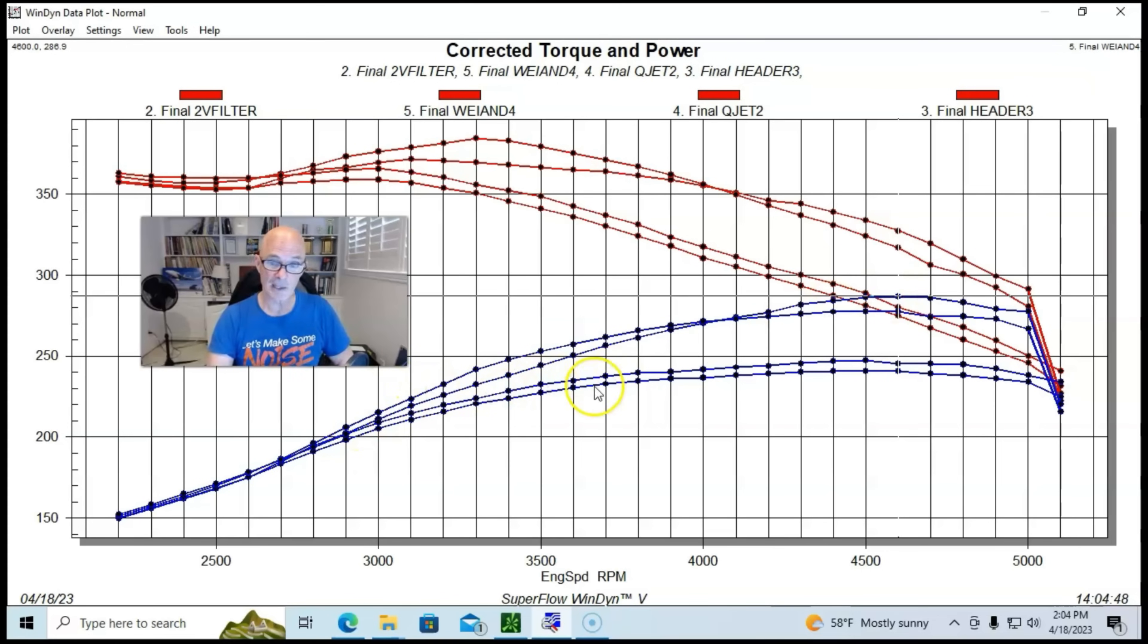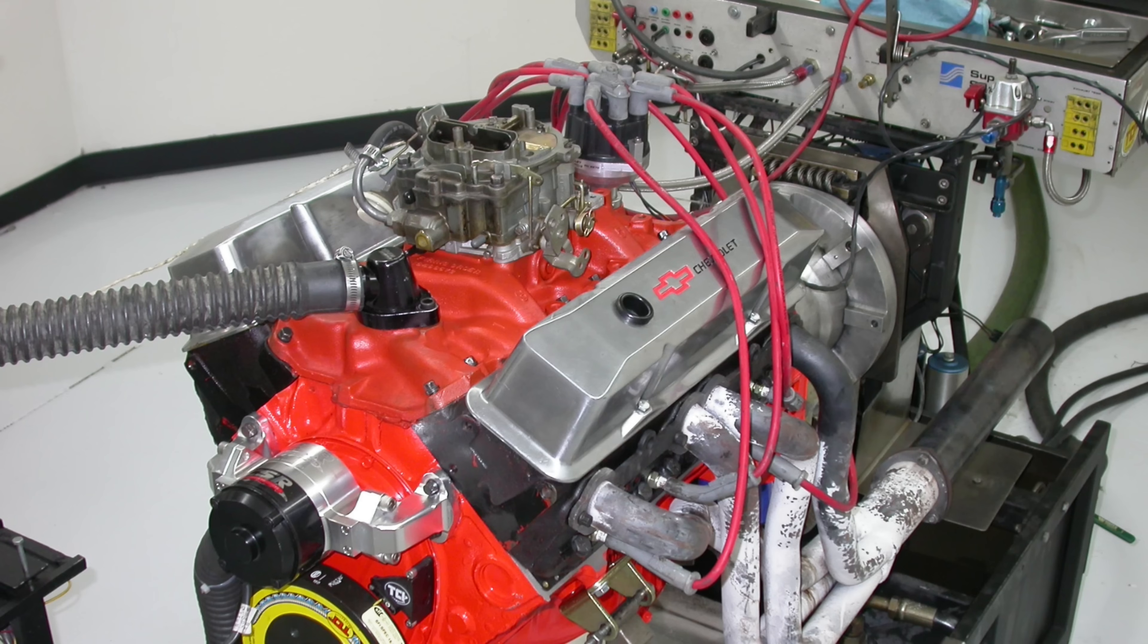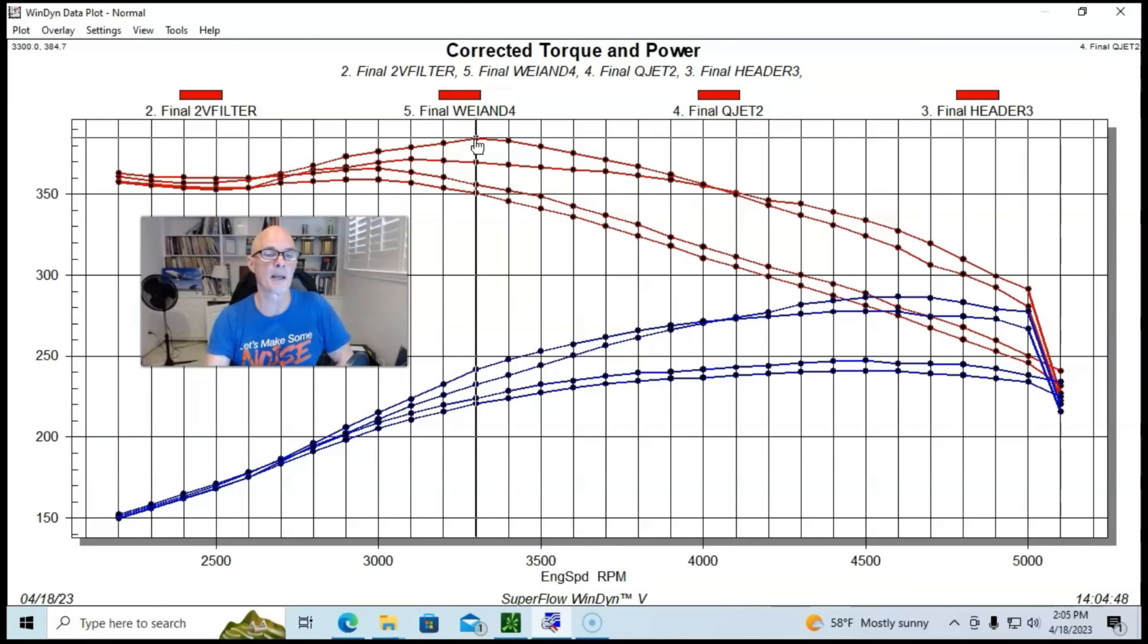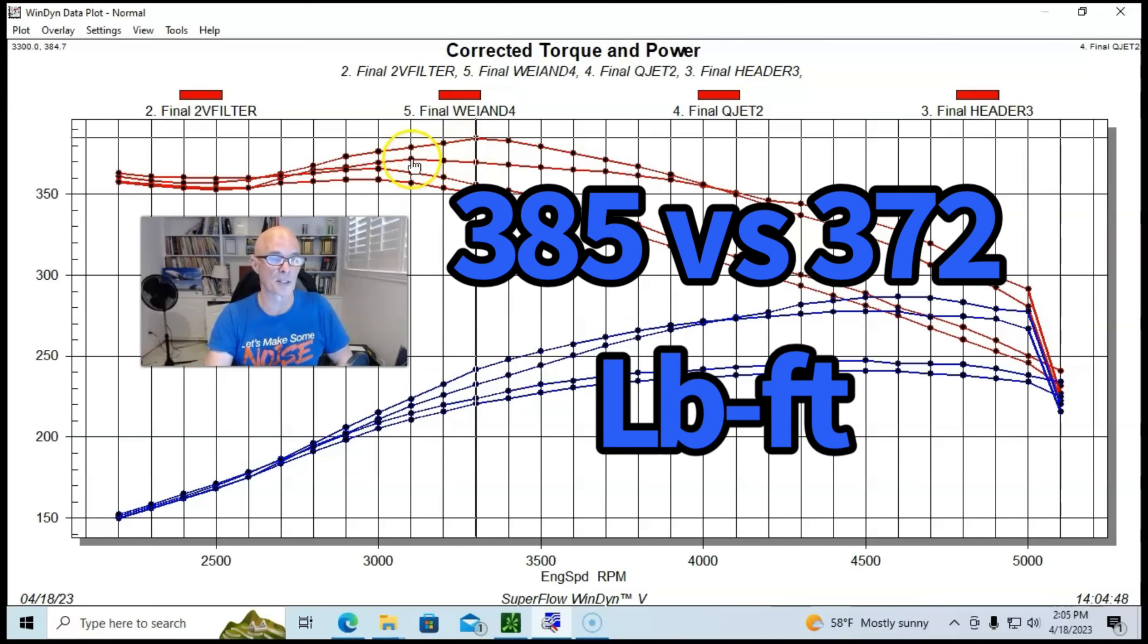It didn't pick up power - it picked up peak horsepower to 287 horsepower, but as you can see it lost power all the way up to 4100 RPM and it definitely lost torque. Where the Quadrajet setup with the factory cast iron intake manifold made 385 foot-pounds, after installing the Weiand it only made 372 foot-pounds.